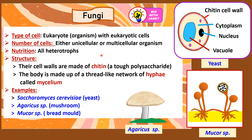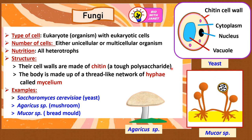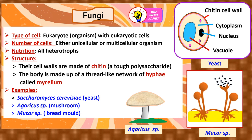Nutrition: all fungi are heterotrophs because they do not contain chlorophyll to carry out photosynthesis — they prefer dark and moist places. Structure: their cell walls are made of chitin, a tough polysaccharide that is also found in the exoskeleton of insects. The body is made up of a thread-like network of hyphae called mycelium. Examples are Saccharomyces cerevisiae — the scientific name for yeast — Agaricus species, a type of mushroom, and Mucor species, the bread mold.